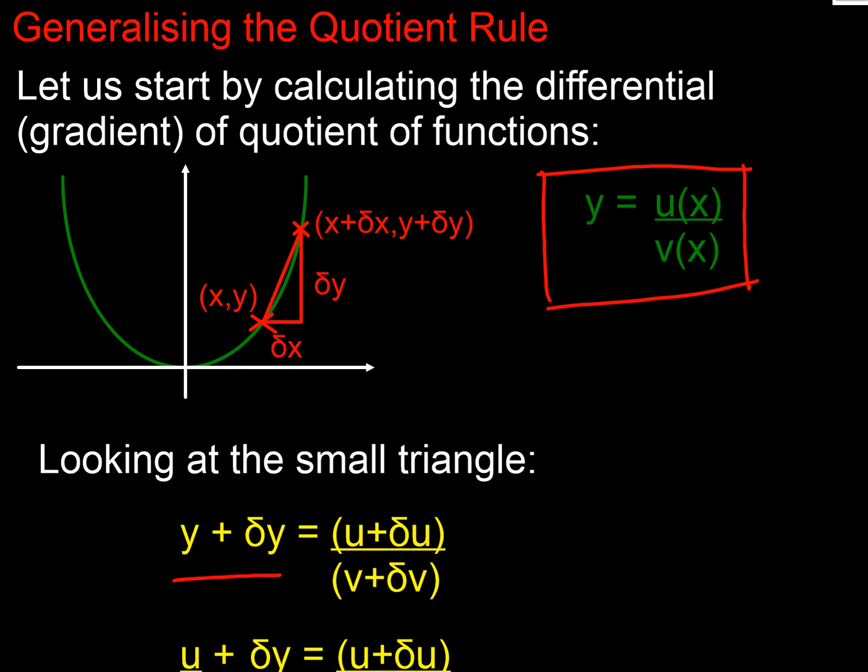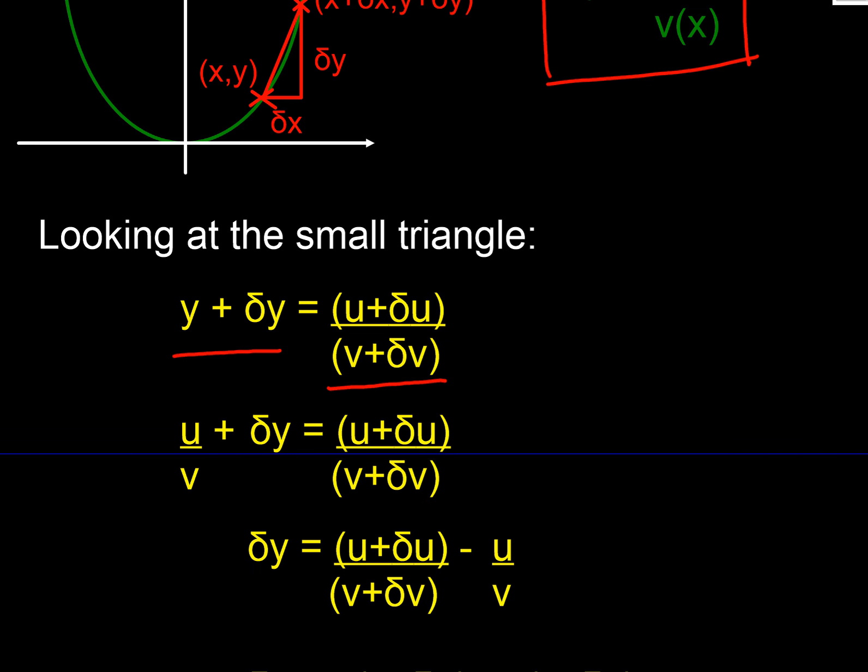Therefore, y plus δy in our triangle is going to be (u + δu) over (v + δv). And of course, y is always going to be u over v. To get δy on its own, we need to subtract u over v from both sides.